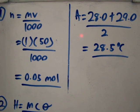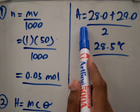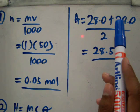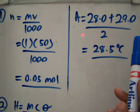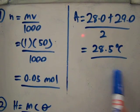If there are two initial temperatures, you must find the average. That is 28.0 plus 29.0 divided by 2, and you will get the average of 28.5 degrees.